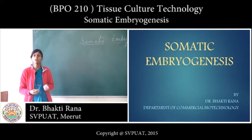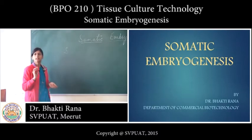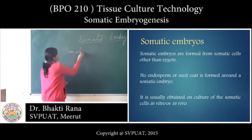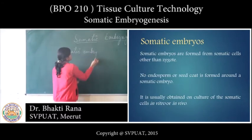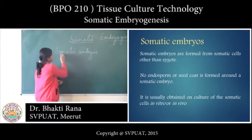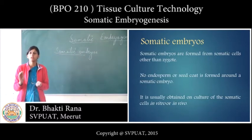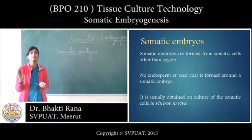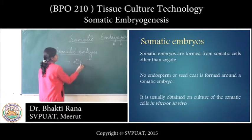Today we will discuss somatic embryogenesis. Somatic embryos are embryos which are produced from plant cells other than the zygote. The zygote is formed by the fusion of male and female gametes and is diploid.